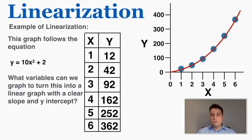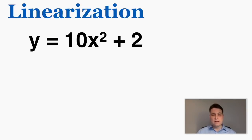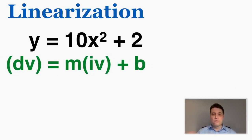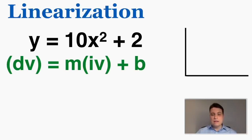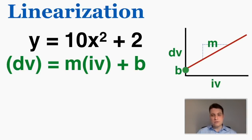To do that, we just need to make this function y equals 10x squared plus 2 match the form of a linear line, which is y equals mx plus b — or dv, the thing on the y-axis, is equal to m times iv, the thing on the x-axis, plus b. It's 100% guaranteed that the end result is going to be a linear line with a y-intercept of b and a slope of m. So we just need to make this particular function match this general equation for a linear line.